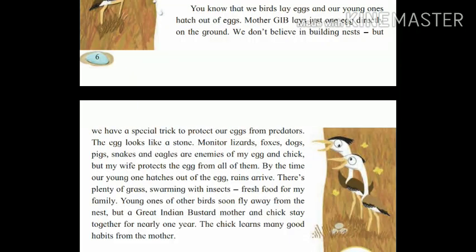We birds lay eggs and our young ones hatch out of eggs. Mother GIB — GIB means Great Indian Bustard — lays just one egg directly on the ground. We don't believe in building nests. But we have a special trick to protect our eggs from predators — predators means animals that hunt, kill, and eat other animals. The egg looks like a stone. Monitor lizards, foxes, dogs, pigs, snakes, and eagles are enemies of my egg and chick. But my wife protects the egg from all of them.